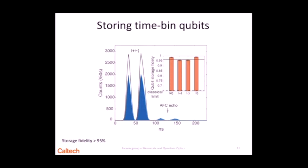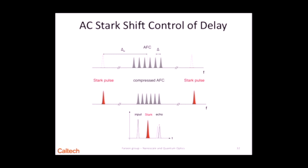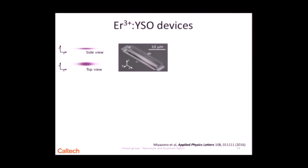We can also store photon pulses. If you take two pulses one after the other, we can store both of them and then get them re-phased back with a fidelity greater than 95%. I'm going to skip over some of these slides because they are a bit too technical.